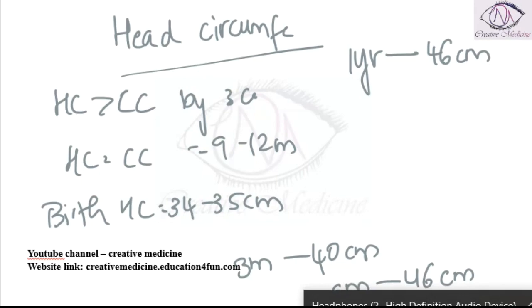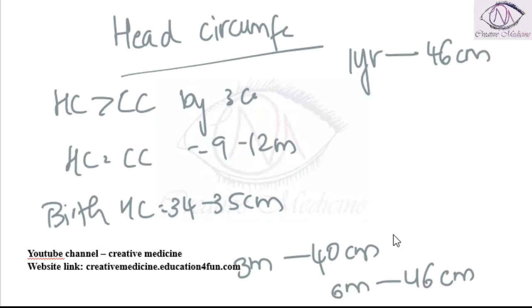By 3 months, the head circumference is 40 cm. By 6 months, the head circumference is 43 cm. And by 1 year, the head circumference is 46 cm.